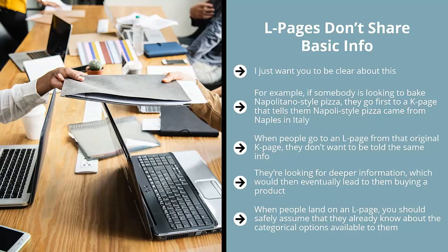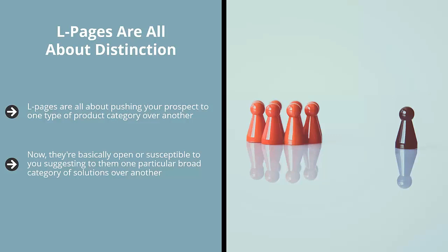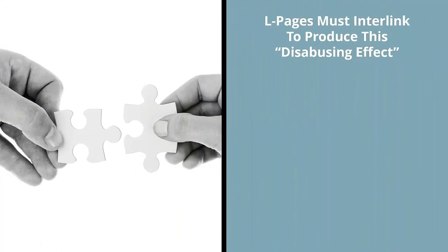When people land on an L page, you should safely assume they already know the categorical options available to them. L pages are all about distinction — pushing your prospect toward one type of product category over another. Since a reader ended up on your L page, they already find you credible to a certain degree. They're now open or susceptible to you suggesting one broad category of solutions over another. This often involves disabusing them of earlier held beliefs regarding other options.